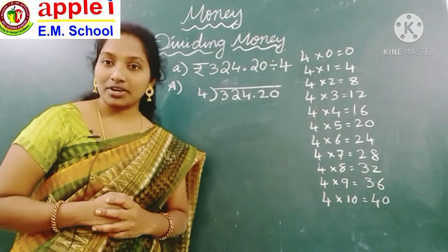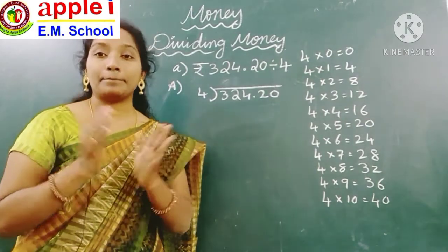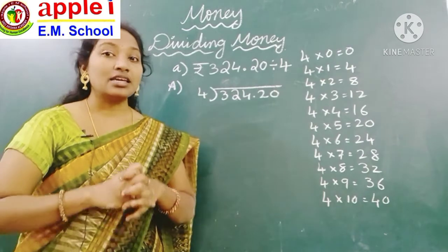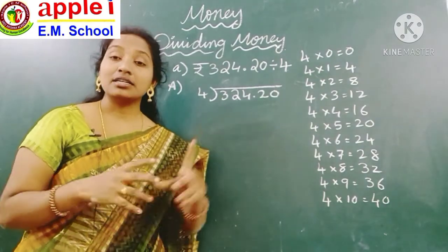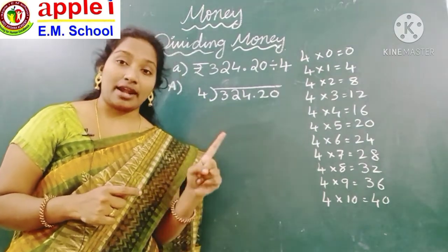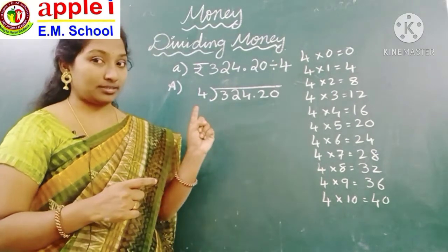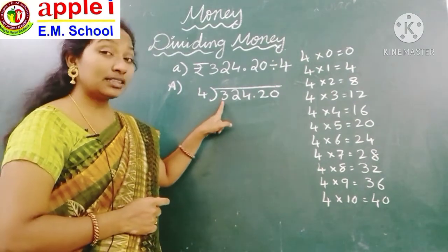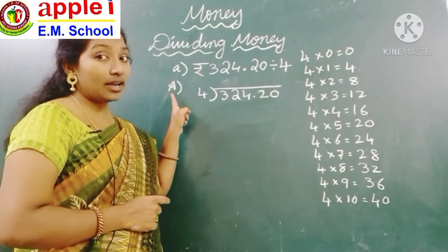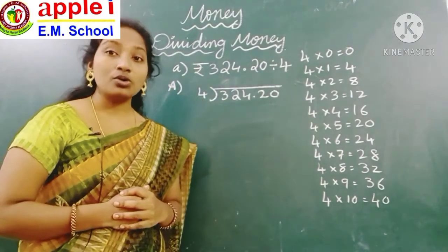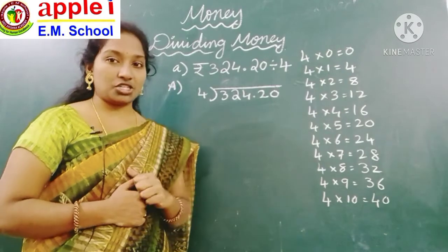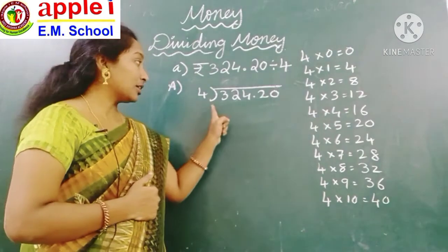What is the first step? Compare. What do we have to compare? Here we have to compare the dividend's first digit and the divisor. So here 3 — 3 is smaller than 4, so we have to consider 2 digits: 32.